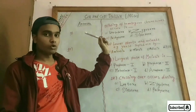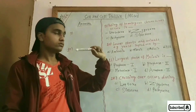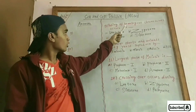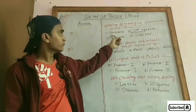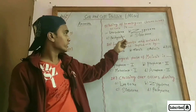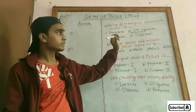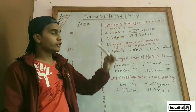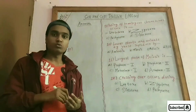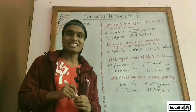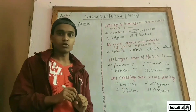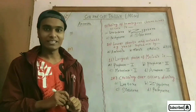Pairing of homologous chromosomes occurs in which stage — leptotene, zygotene, diplotene, or diakinesis? Pairing of homologous chromosomes is known as synapsis, which occurs in zygotene.